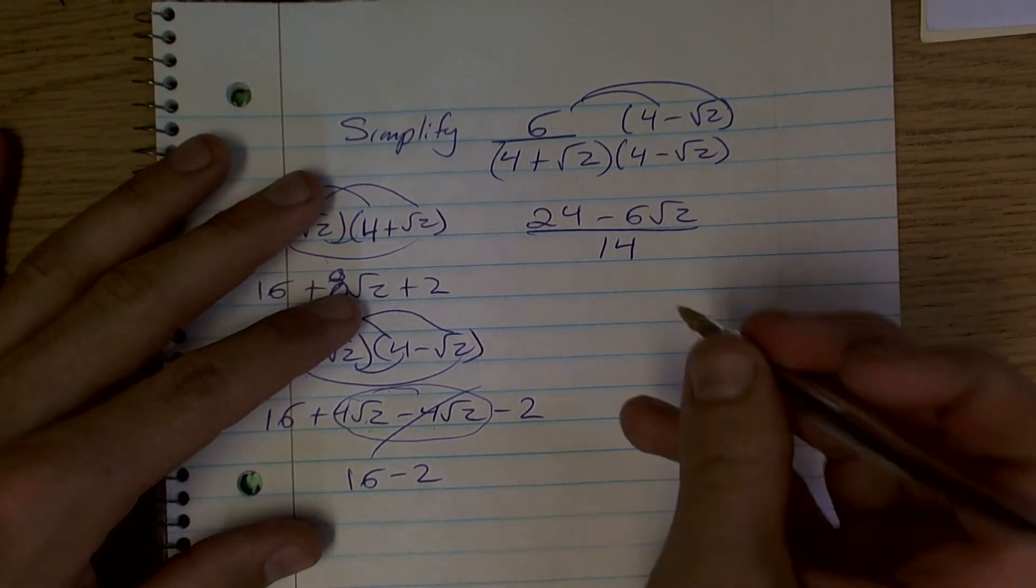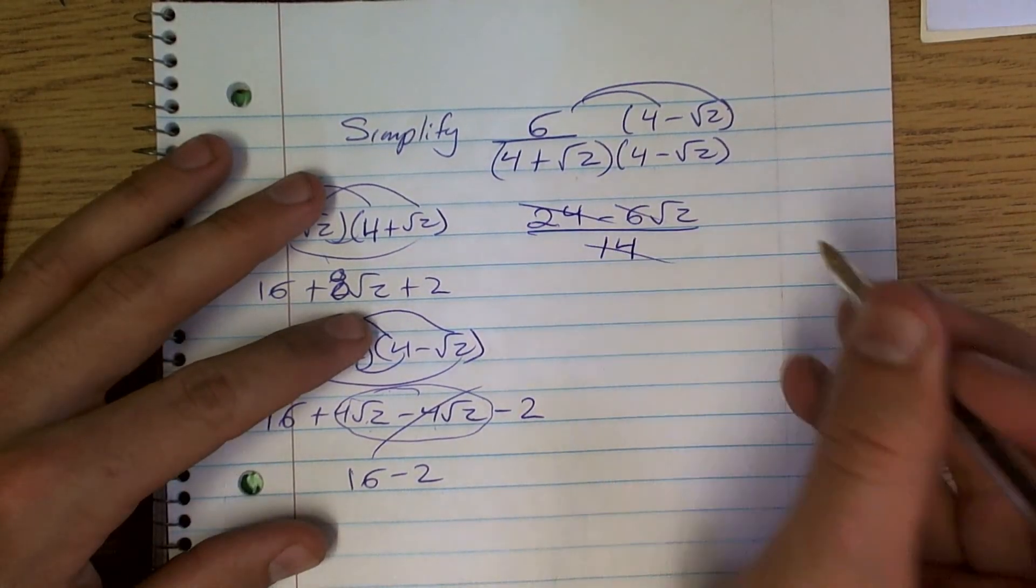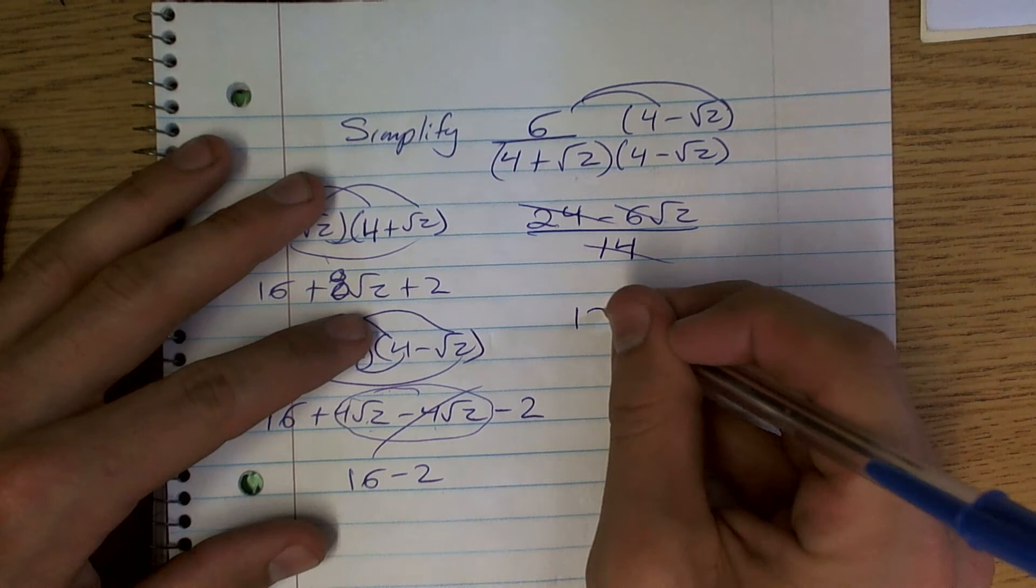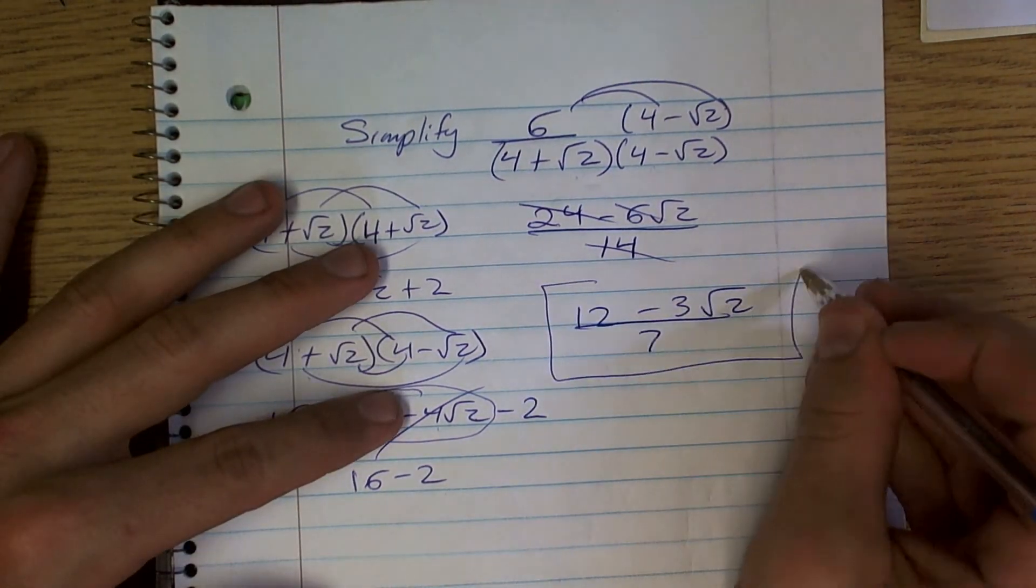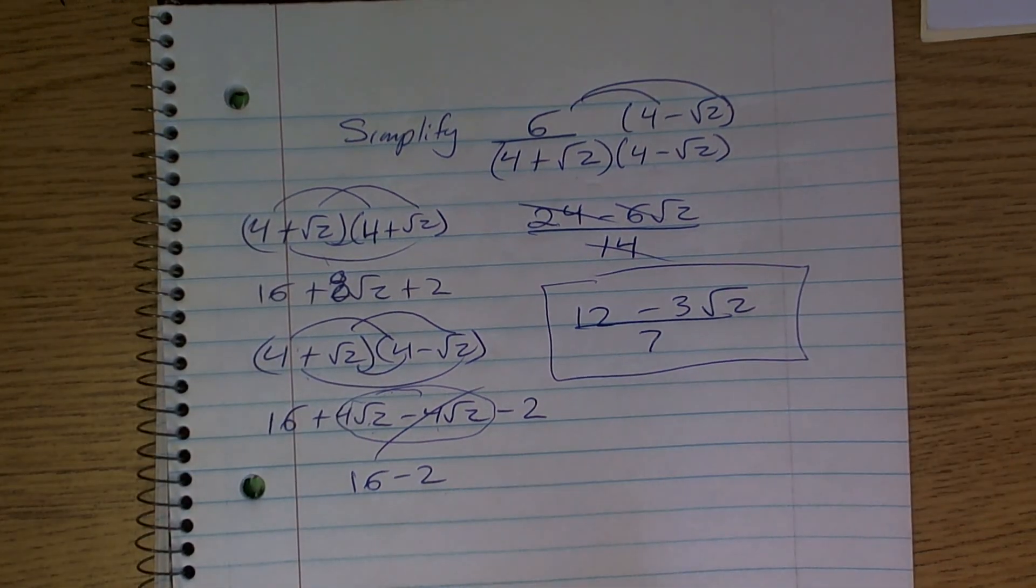Then we look at this and say, can we simplify this at all? And we can actually divide everything by 2 and I get 12 minus 3 radical 2 over 7. And then that would be our final answer.